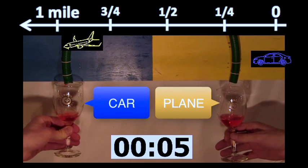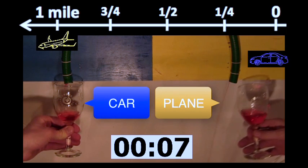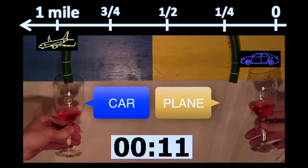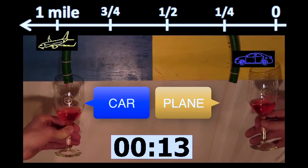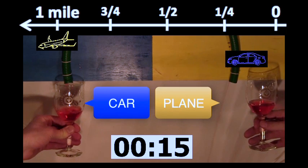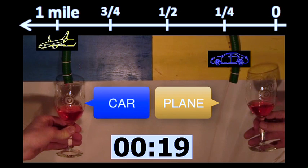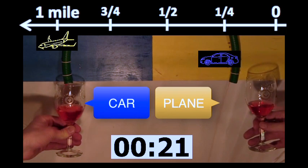As we said, the plane is flying much faster than the car, and you can see in the animation at the top that it has already arrived. The amount of liquid you see in the cup on the right hand side is exactly the amount of fuel that the Boeing 737 requires to carry one passenger over 1 mile.